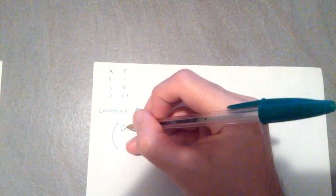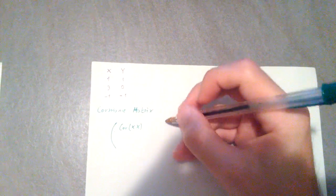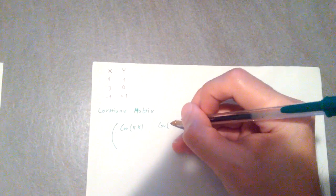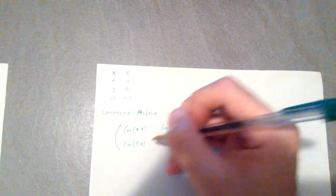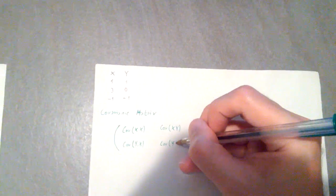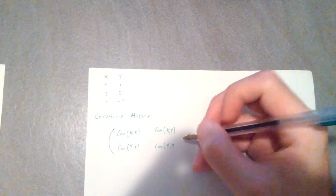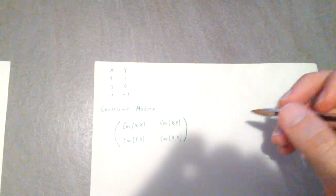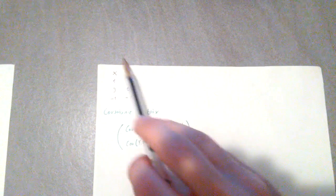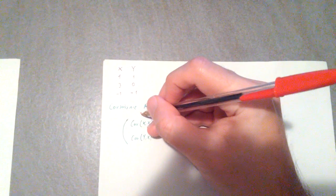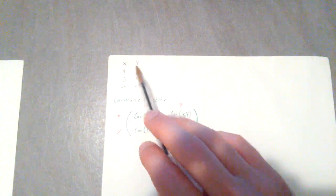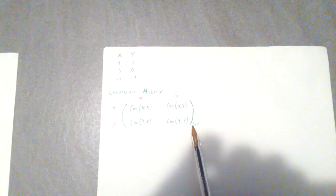So it's going to be the covariance of x,x — the covariance of x,y — the covariance of y,x — and the covariance of y,y. Now this is because this is a two-by-two matrix. We have two entry points, x and y, and it's as if we have x and y labeling the rows and x and y labeling the columns. So if you have two entry points you're going to need a two-by-two matrix to express them.